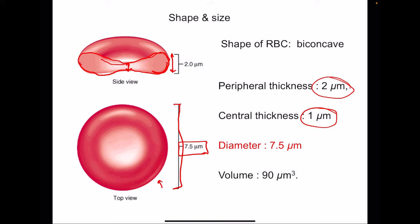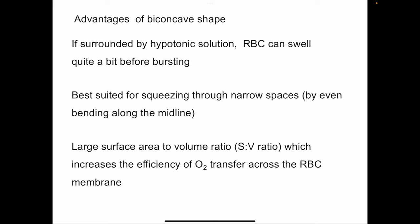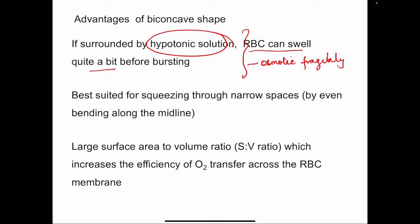The volume of a single RBC is 90 cubic micrometers. One advantage of the biconcave shape is that if surrounded by a hypotonic solution, water moves into the cell and the RBC can swell quite a bit before bursting. This concept is used in the osmotic fragility test, where RBCs are placed in solutions of different hypotonicity. As RBCs age, osmotic fragility increases due to loss of membrane and change in shape.